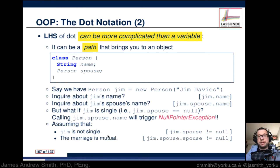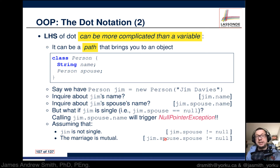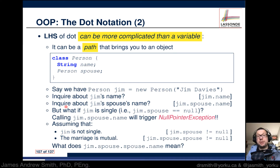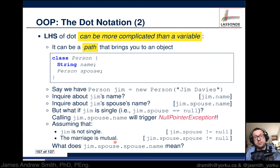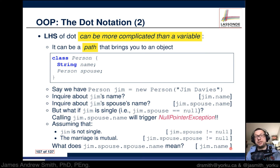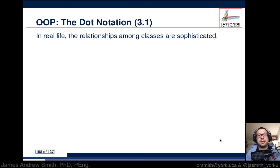We're also assuming that the marriage is mutual — that Jim's spouse has a spouse, and that it's also not null. So then the question is: with all these circular connections, what does this mean? If we do Jim.spouse.spouse, we take Jim's attribute spouse, that person has an attribute spouse, and we ask for the attribute name of that spouse. That should be Jim's name — effectively Jim.name.